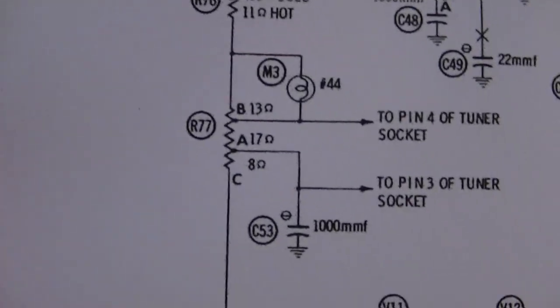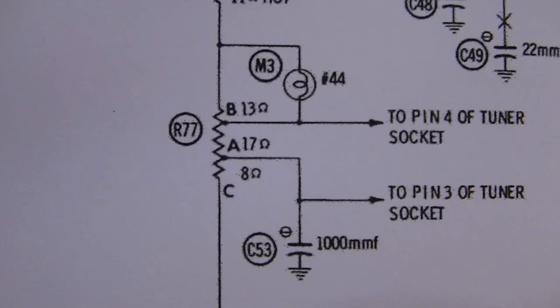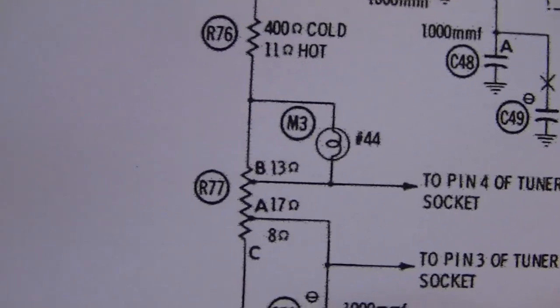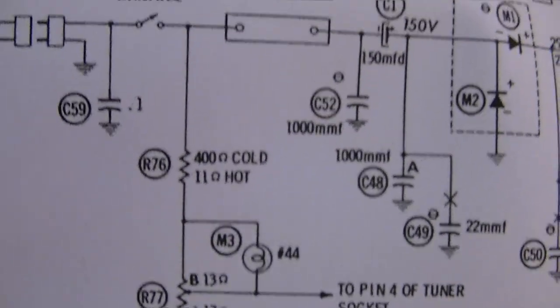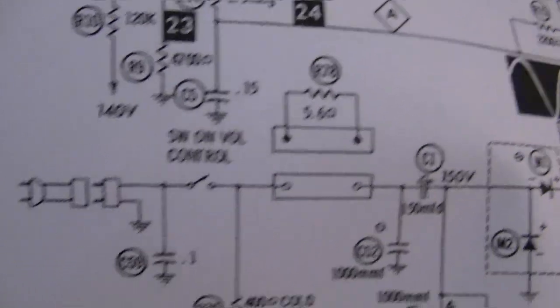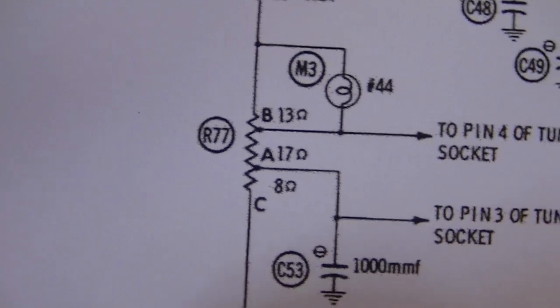Here's where that resistor is on the schematic. So you've got three sections A, B, C. All of them are open. I also checked on the pilot light, which goes across the B section, and that number 44 bulb is also open. So somehow, that blew open, that blew open, that blew open, and all three sections of that are open.